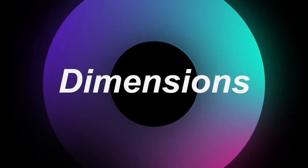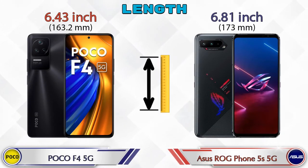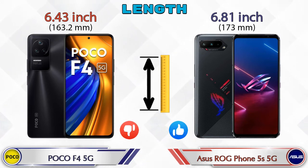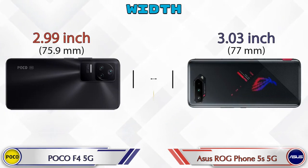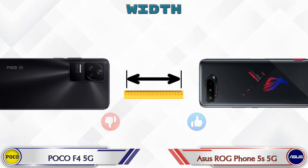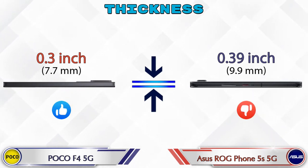Now let's check the details about dimensions. For length, the F4 5G is 6.43 inches and the ROG Phone 5s 5G is 6.81 inches. Width: F4 5G is 2.99 inches and ROG Phone 5s 5G is 3.03 inches. For thickness, the F4 5G is 0.3 inches and the ROG Phone 5s 5G is 0.39 inches, which is bigger than the F4 5G.